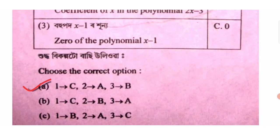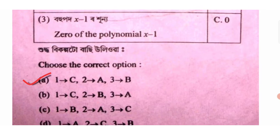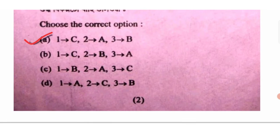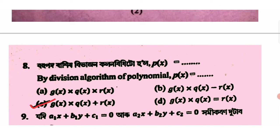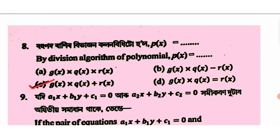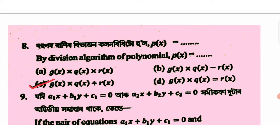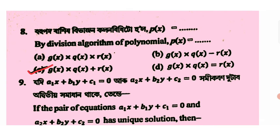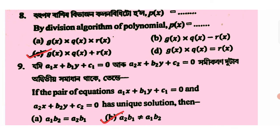Option to A to 1 to C, 2 to A, 3 to A, 3 to A. So the option is C. The next option is C. Px equals Gx into Qx plus Rx. Option to C2.